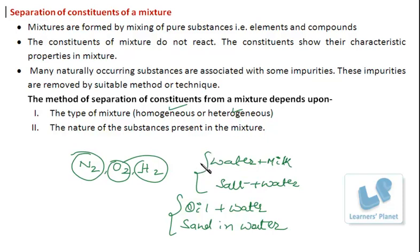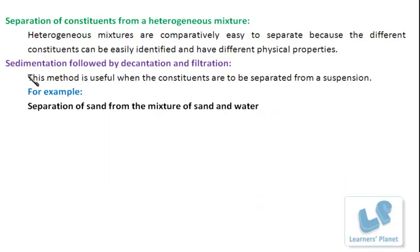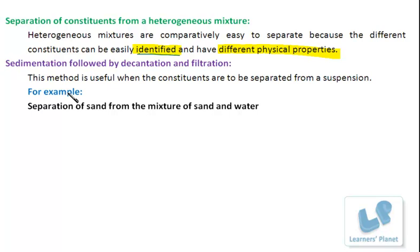We will first discuss the separation of constituents from a heterogeneous mixture. Heterogeneous mixtures are comparatively easy to separate because the different constituents can be easily identified and also have different physical properties. For example, a mixture of sand and pebbles can be easily identified and their physical properties — shape, size, and weight — are all different.